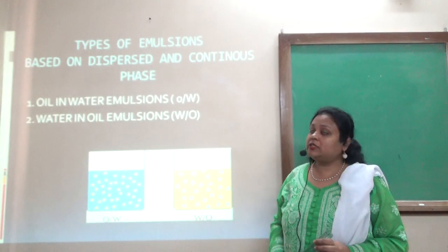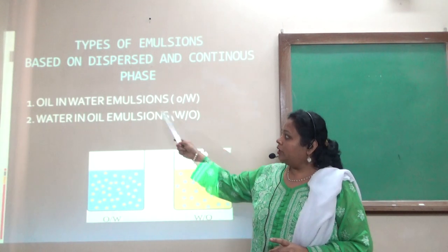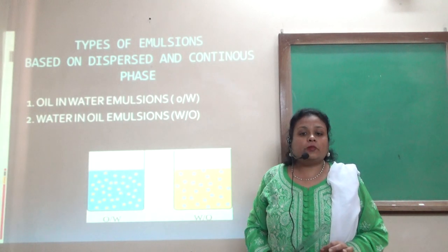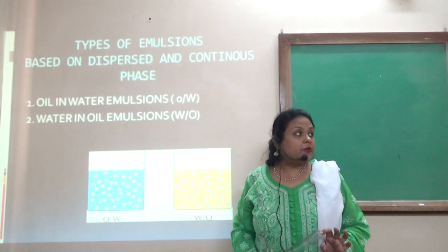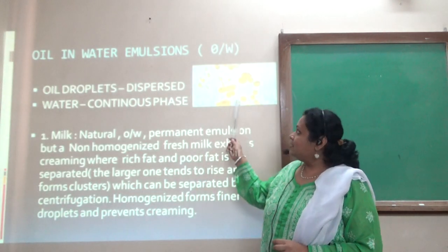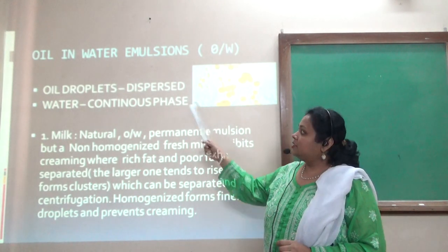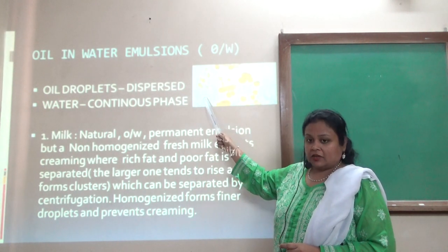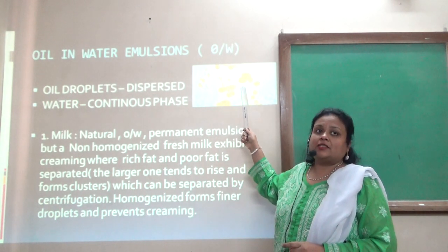Types of emulsion based on dispersed and continuous phase. There are two types: oil in water emulsion, which we call OW, and water in oil emulsion, which is WO. In the oil-in-water emulsion, oil particles are the dispersed phase whereas water is the continuous phase.